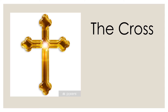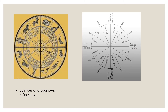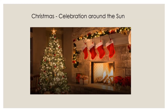Another huge symbol in Christianity is the cross. In ancient depictions, the Sun is represented with the 12 signs of the zodiac and a cross section. The left and right of the cross represent the fall and spring equinoxes, while the top and bottom represent the summer and winter solstices — breaking the year into four seasons. The Sun calculates time, provides heat, light, and grows crops. The Sun is the major solar deity, and the solar deity is the representation of God — the Sun of God. Christmas is the celebration around the Sun.